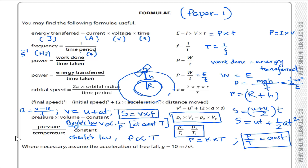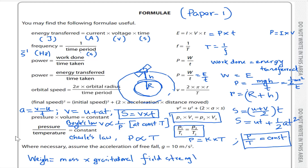Where necessary, assume the acceleration of free fall equals g = 10 meters per second squared. Weight equals mass times gravitational field strength: W equals m times g.